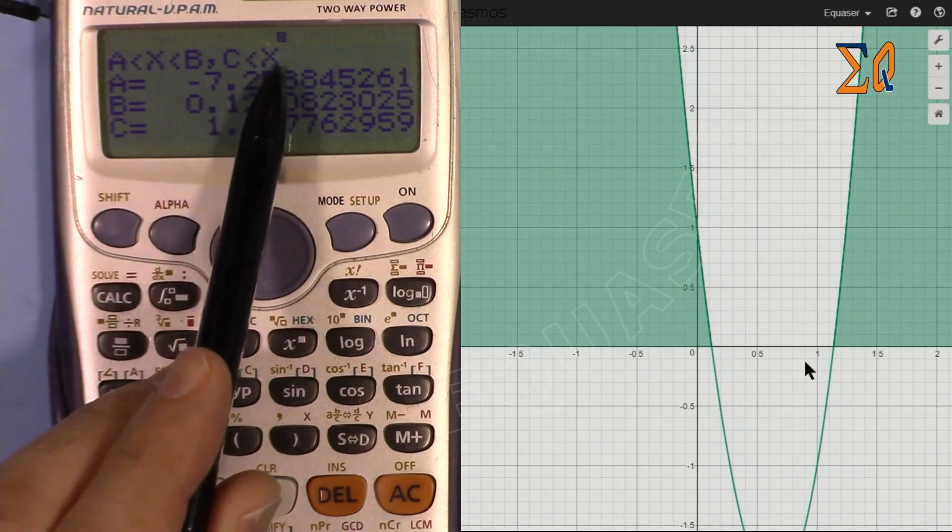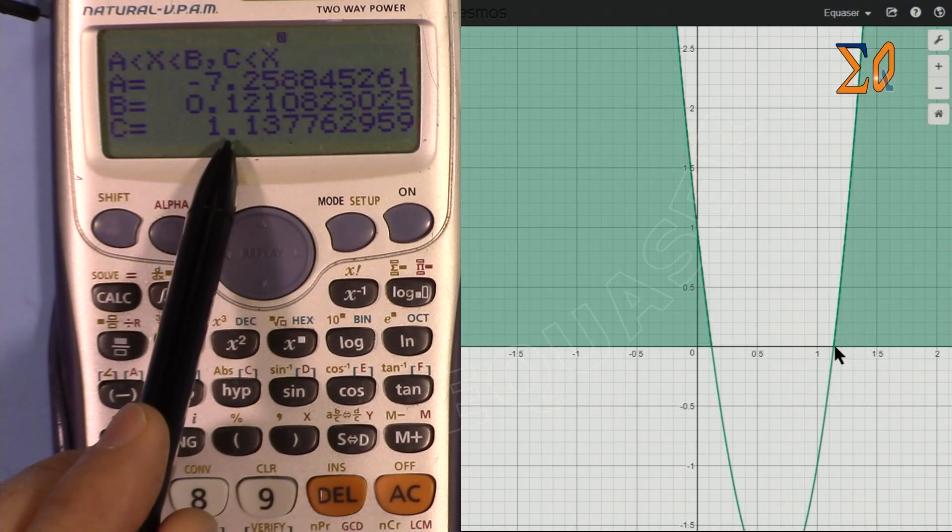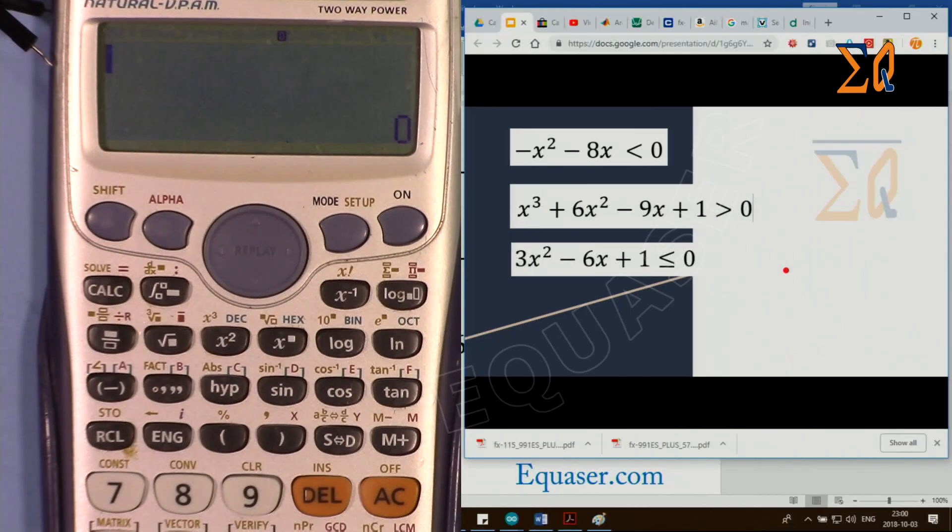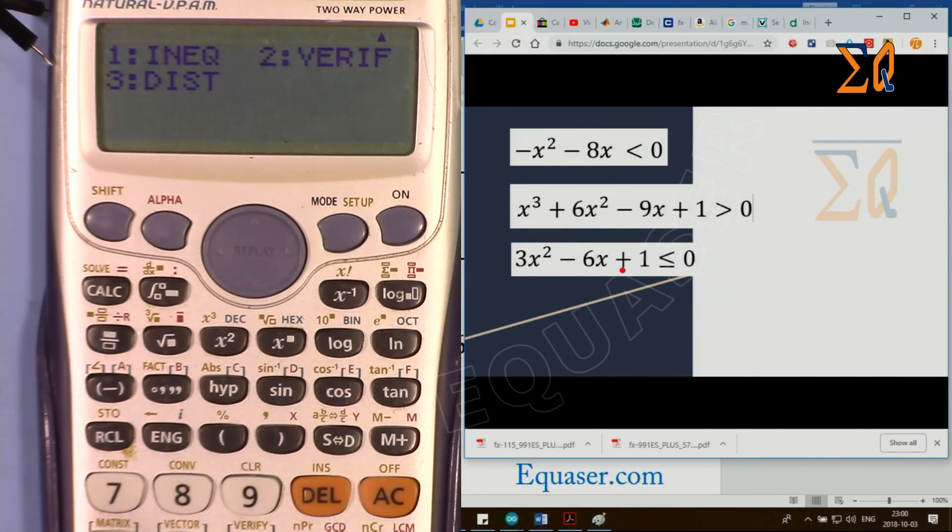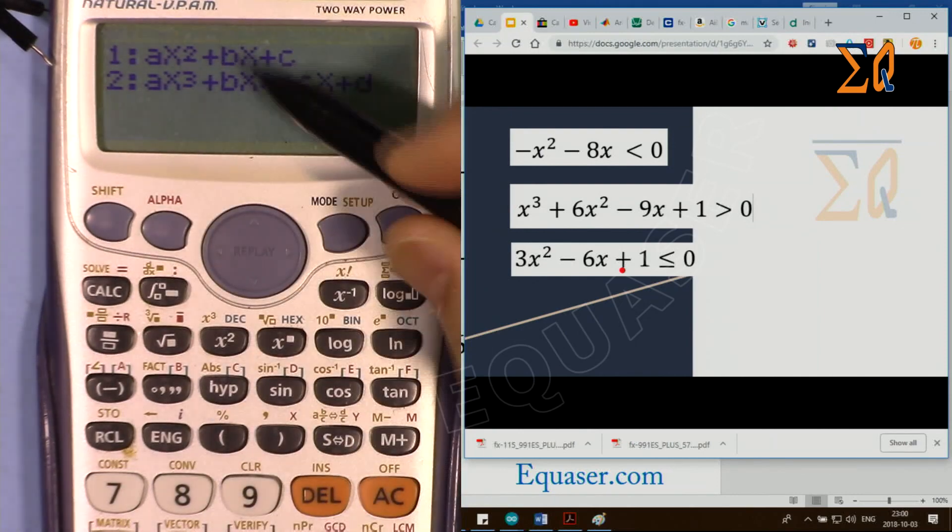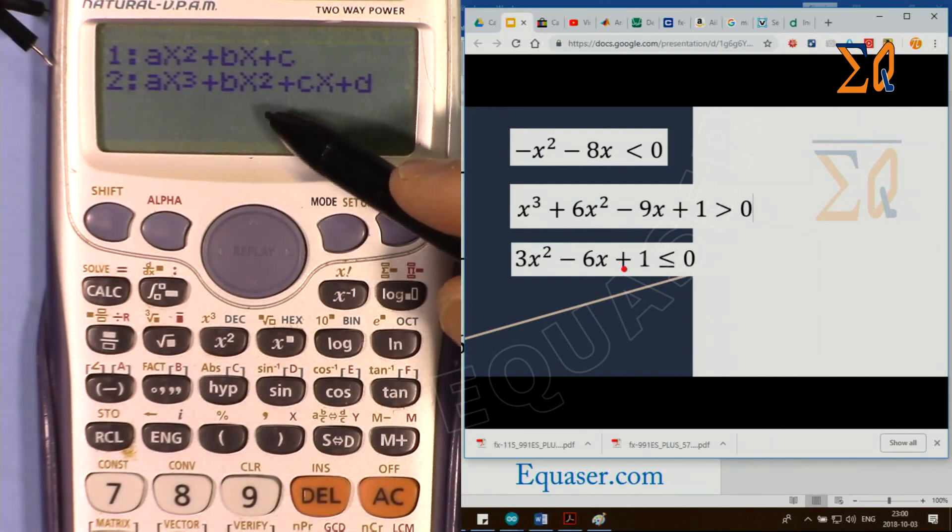Now let's do the equation of second degree: 3x² − 6x + 1. This time we want to check if this is valid. We want to see at what value of x the y is smaller than or equal to 0. Press mode, go down, press 1, and then for second degree press 1.